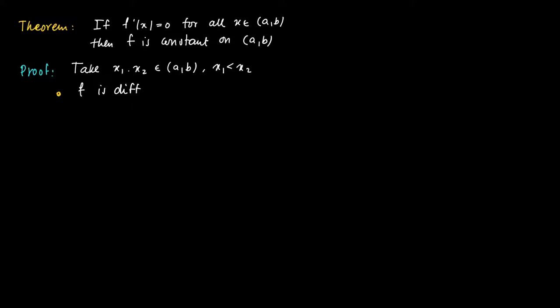Now first we know that f is differentiable on (x1, x2), and also f is continuous on the closed interval [x1, x2]. This is merely a result of the differentiability on the open interval (a,b), which contains the closed interval [x1, x2].